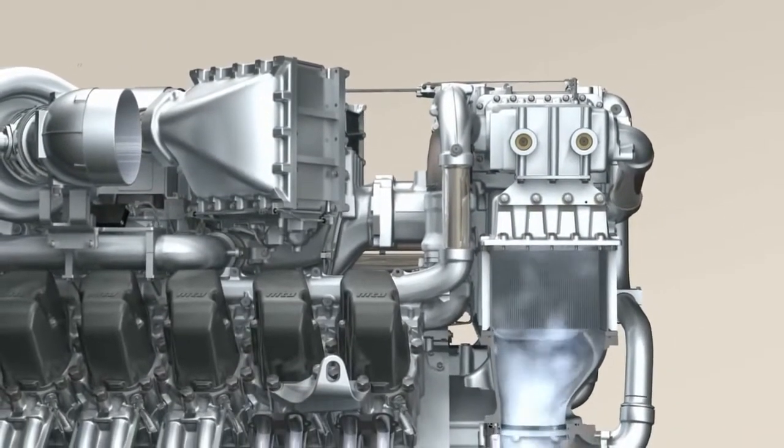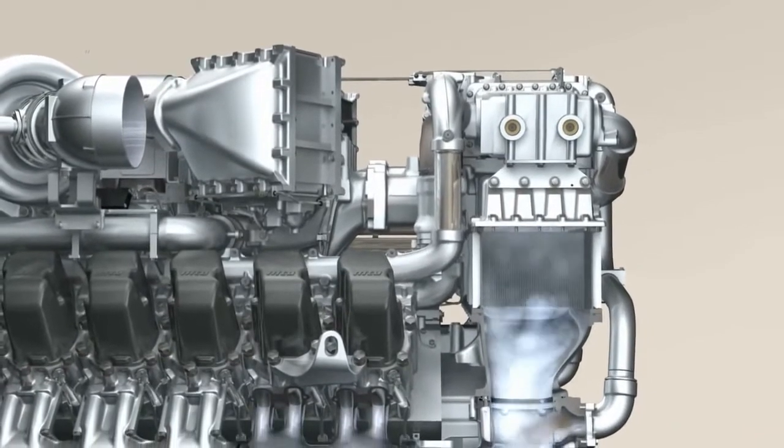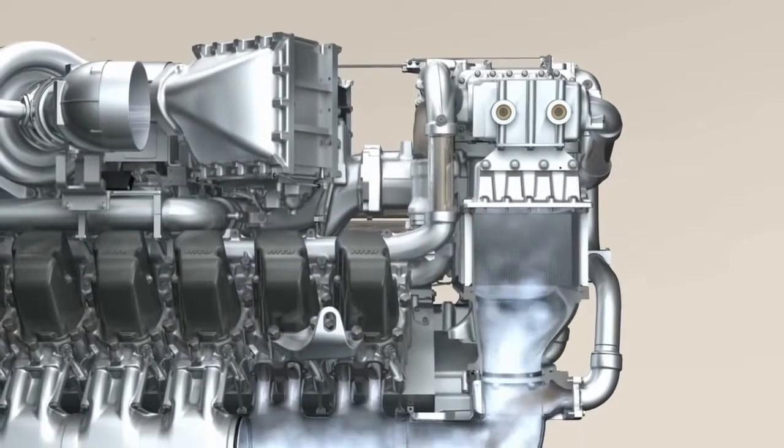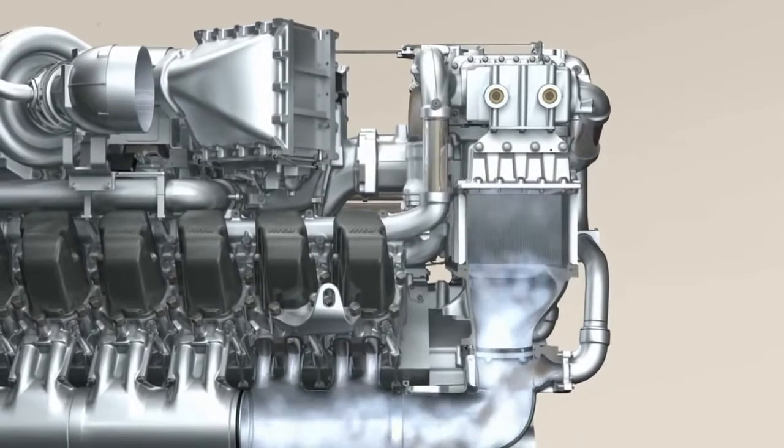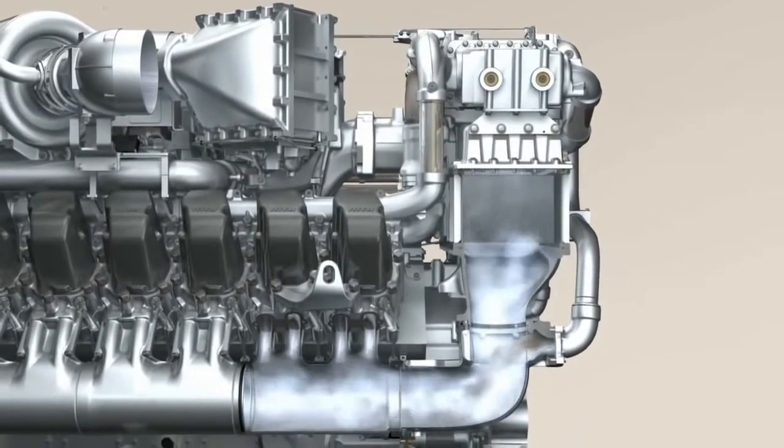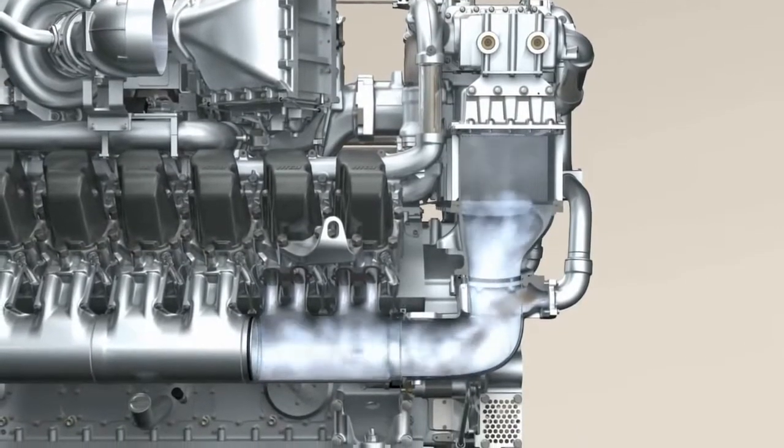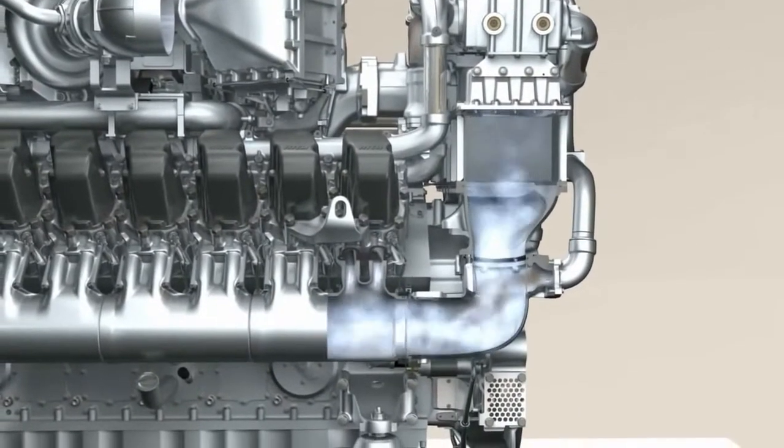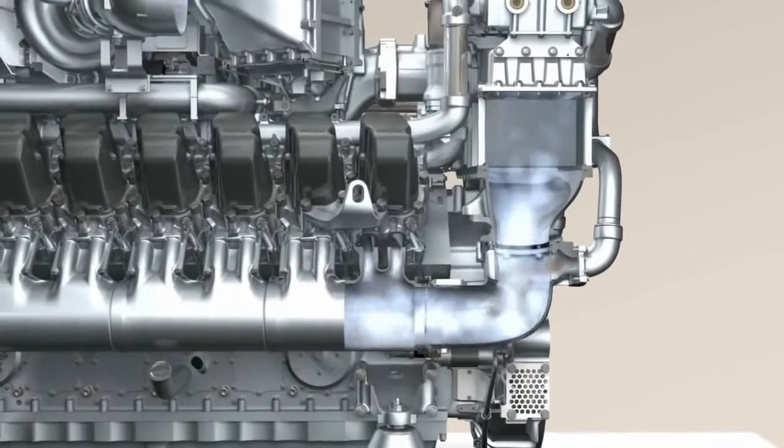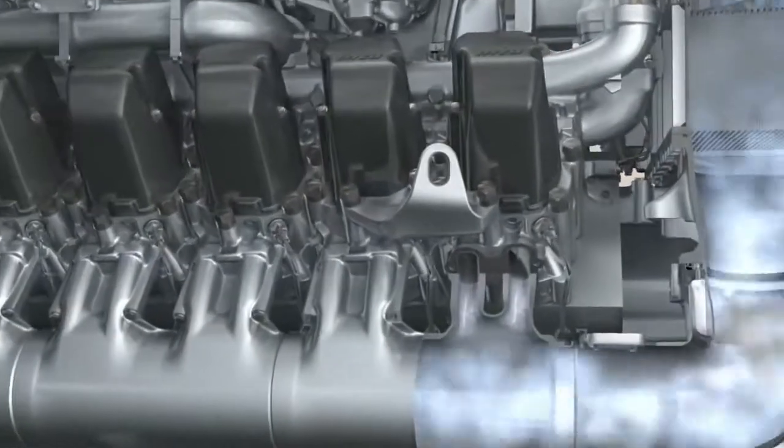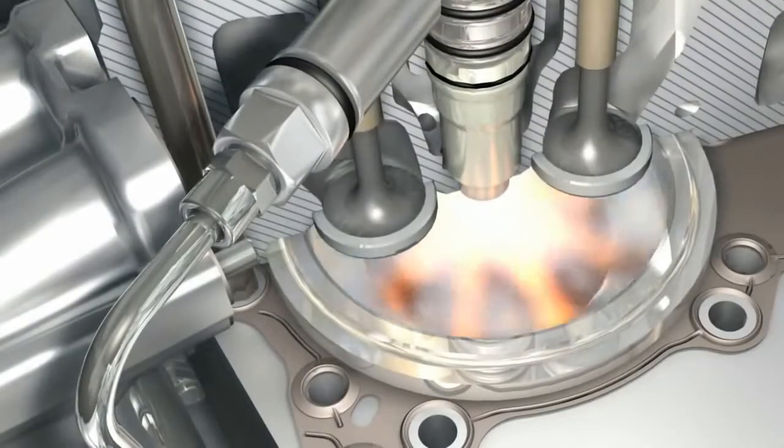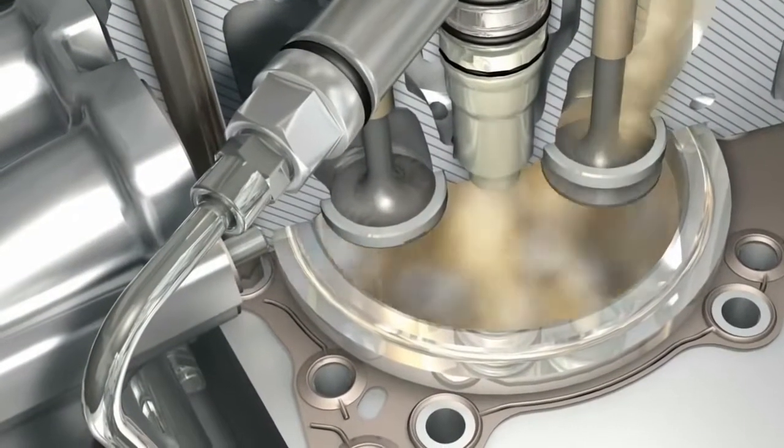The air heats up significantly during compression. It needs to be cooled before it enters the combustion chambers. The charge air coolers perform this task. Cool charge air helps to reduce the emissions created during combustion. MTU works with its suppliers to develop highly efficient and compact solutions for charge air cooling.